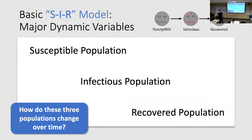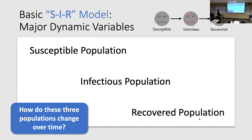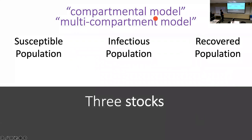One of the simplest epidemic models is the SIR model. It has three major dynamic variables: a group of susceptible people, a group of infectious people, and a group of recovered people. You take a population and partition it into these three parts. This type of model is called a compartmental model — you think about a large population, break it into parts, and model how individuals move from one part to another.